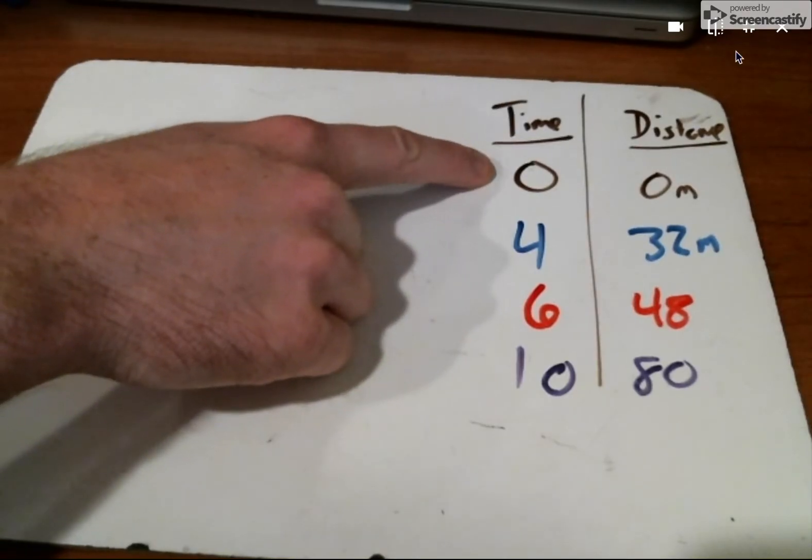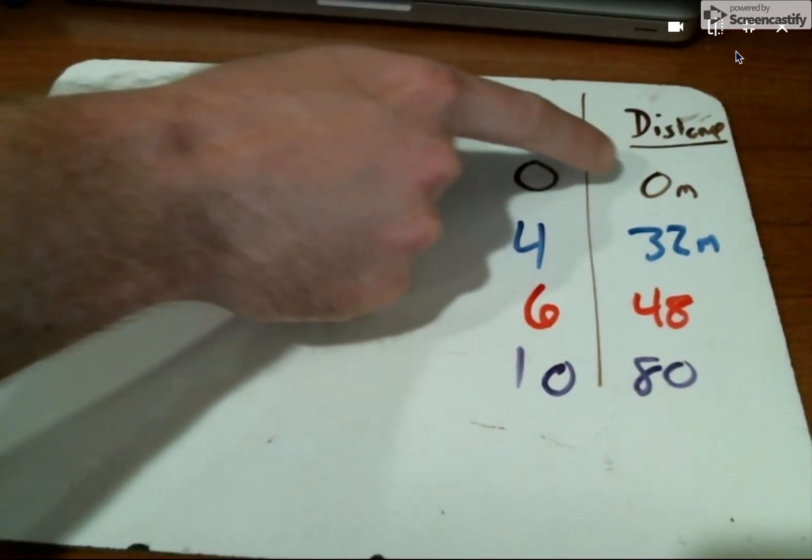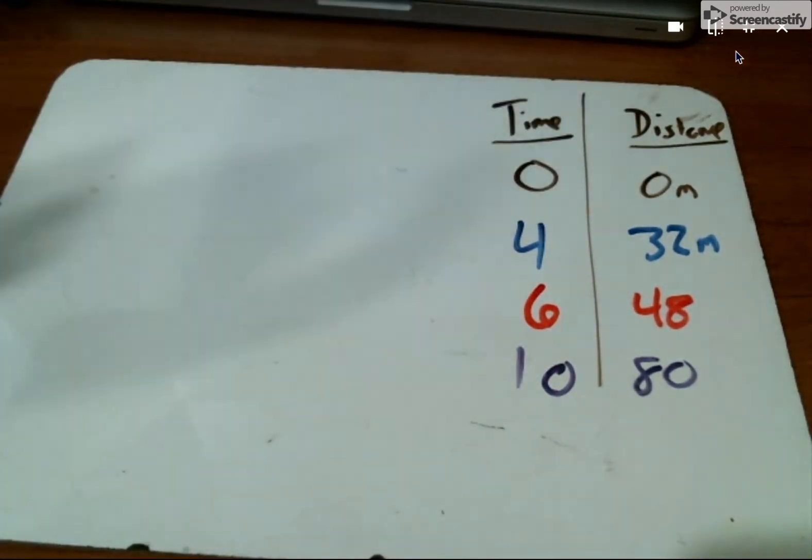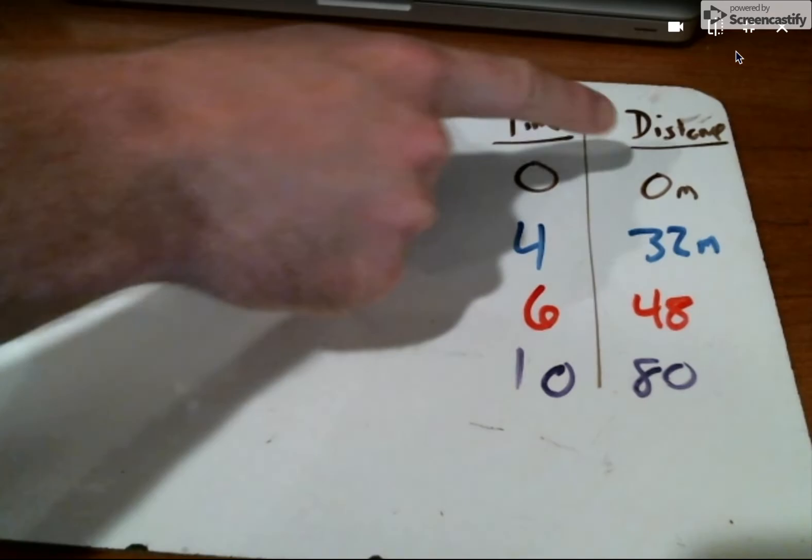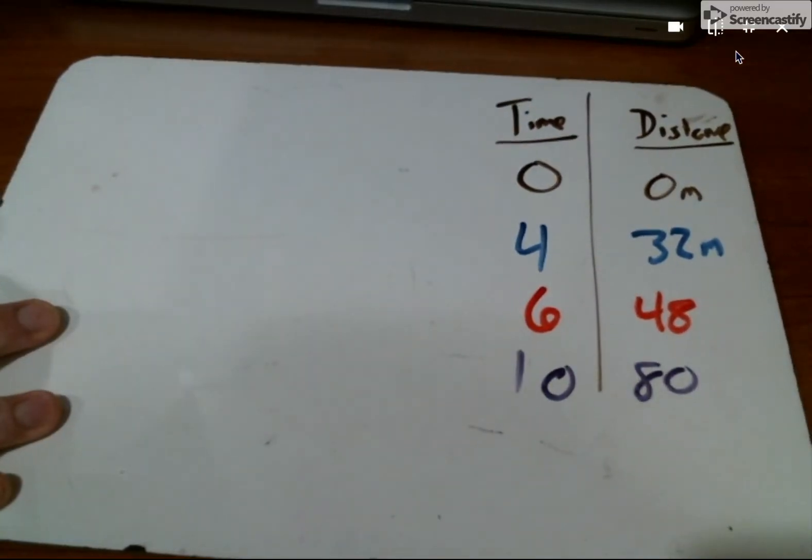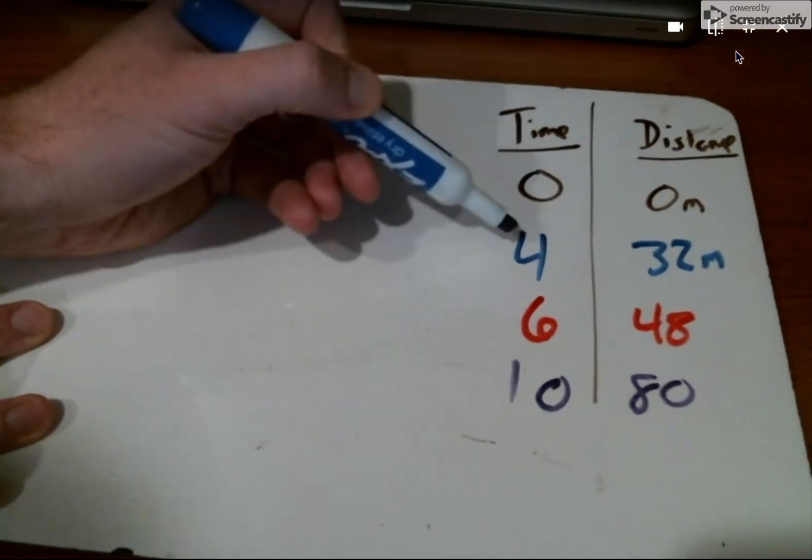We see at the beginning, of course, if there's no time that's gone by, this relationship starts at zero and zero. Lilo's not going to run any distance until the race actually starts. So we can say it starts at the origin, or when x is equal to zero, y is also equal to zero in this relationship.